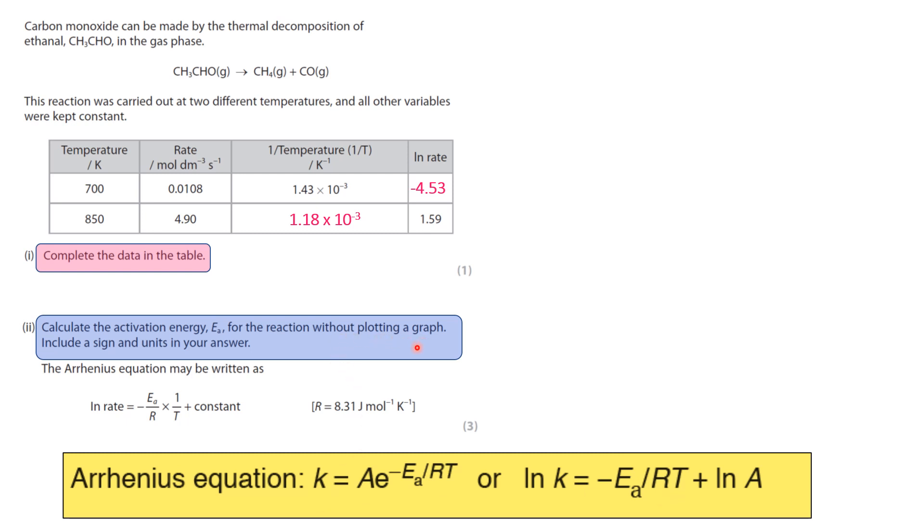But it says to not plot a graph. So just having a think about the graph, first of all, obviously the x-coordinate would be 1 over T. Ln k would be the y-coordinate. And the intercept between the line you draw and the y-axis would be the natural log of A.